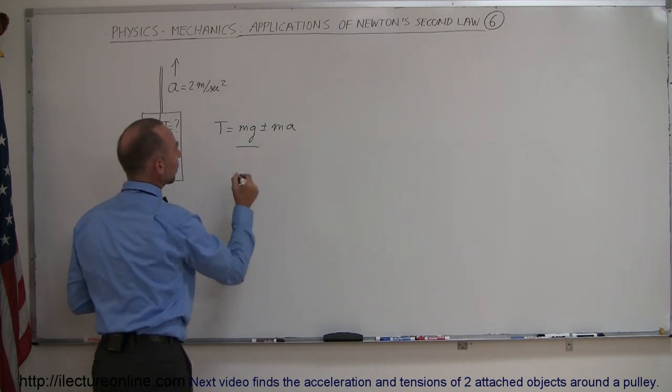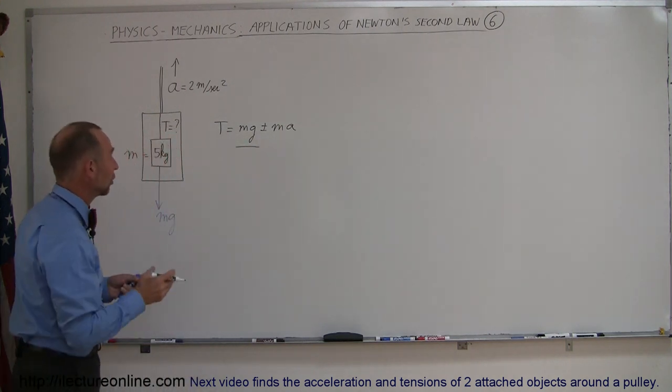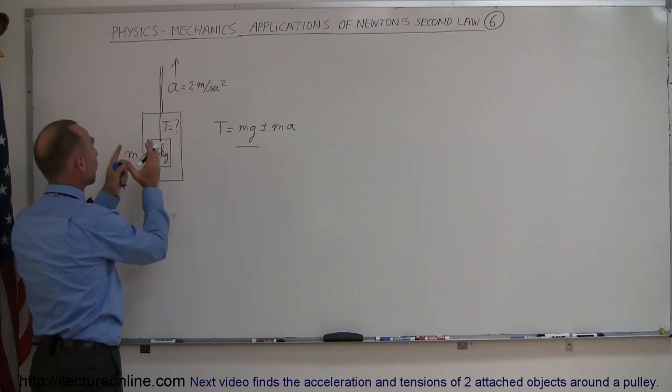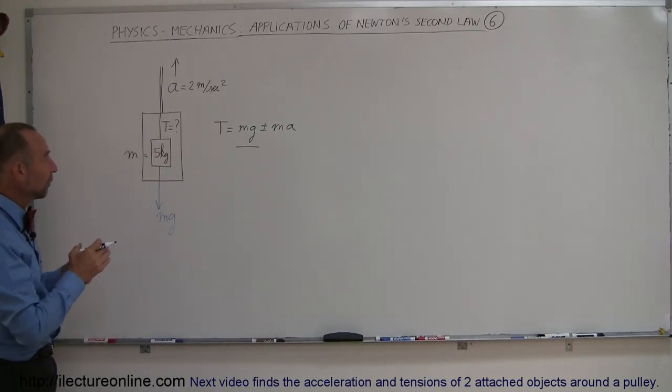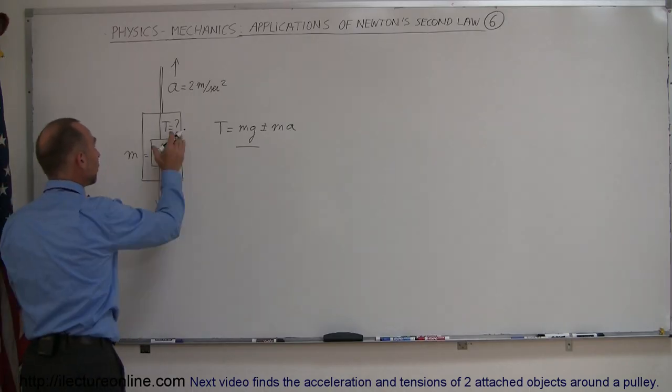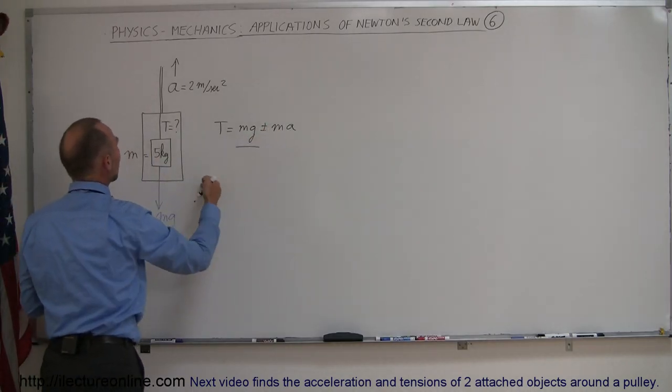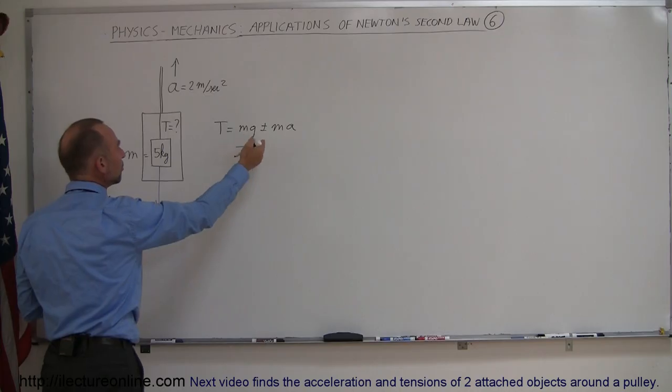Again, this component is simply the weight of the object, so the tension required in the string is equal to the weight of the object plus or minus the force required to accelerate it. If the acceleration is upward, we use plus ma. When the acceleration is downward, we use minus ma.